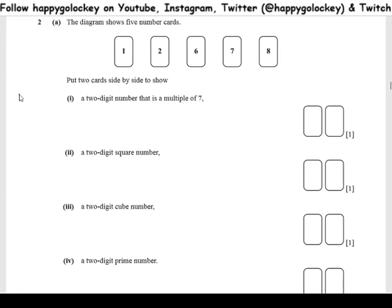So this is a question from Cambridge IGCSE paper 3, the 2020 specimen paper, so it's very appropriate for the new papers. Here's the question. You've got five number cards: 1, 2, 6, 7 and 8, and you've got to put two cards side by side to show: